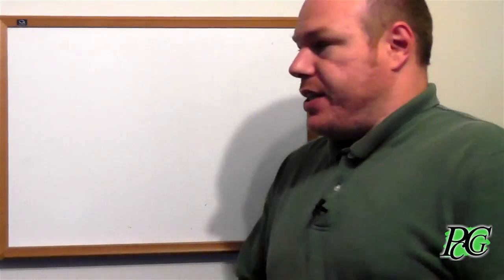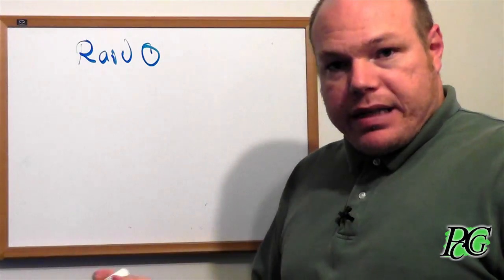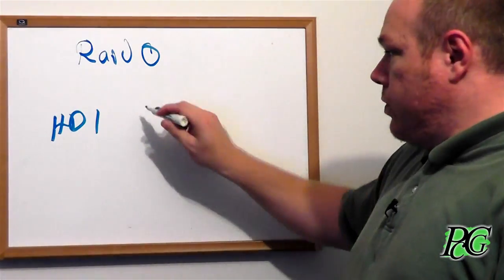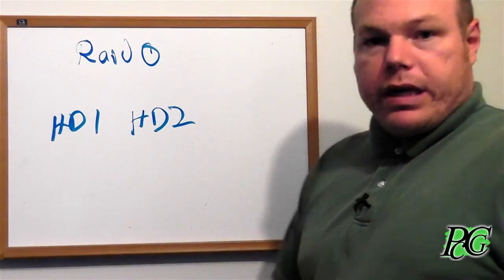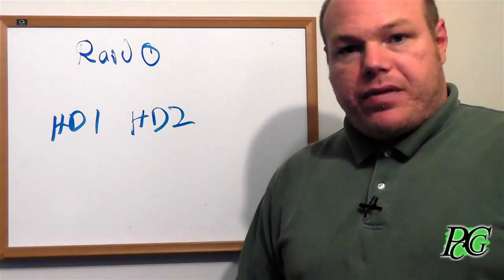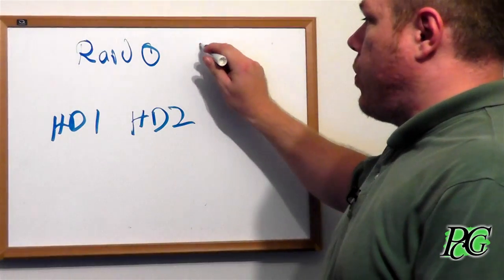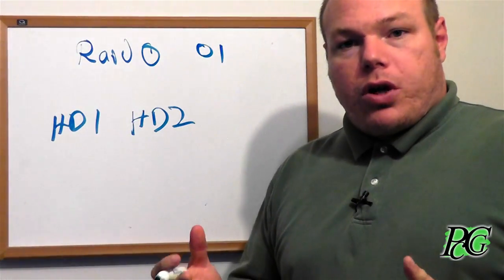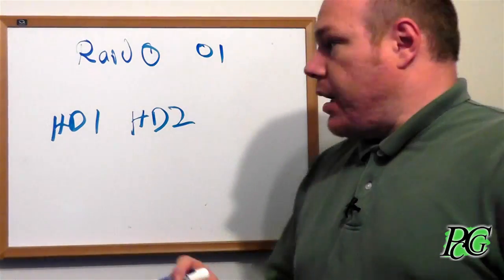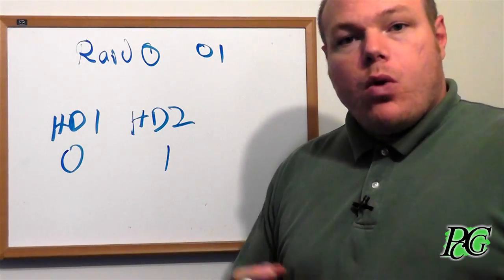Let's start with RAID 0. In the most basic sense, if we take two hard drives — hard drive 1 and hard drive 2 — what it does is it stripes the information, meaning it splits the information between two drives. Using simple bits, zeros and ones: if we want to write 0 and 1, on a normal hard drive that 0 and 1 would go onto a single hard drive. But with a RAID 0 setup the information gets split, so the 0 ends up on one drive and the 1 ends up on the other.